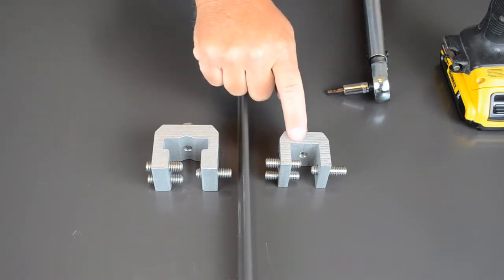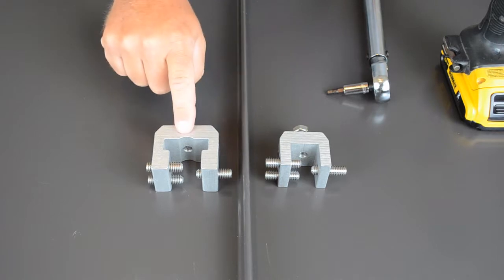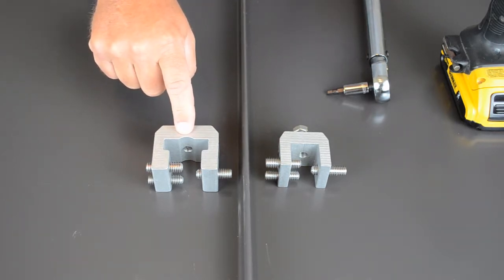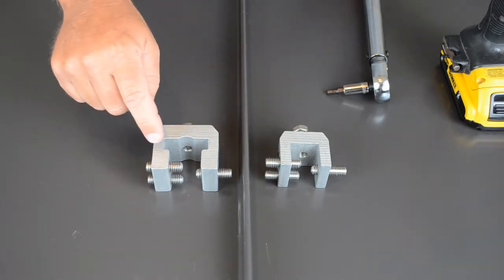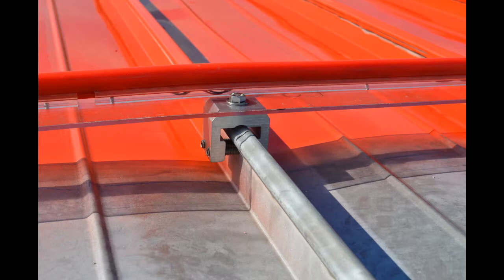They're both universal fit. The RC is good for about 90% of today's standing seam panels. The RCT is going to fit about 95% of today's standing seam panels. The difference is the RCT is going to fit your wider bulb seams and T seams up to an inch and a half.